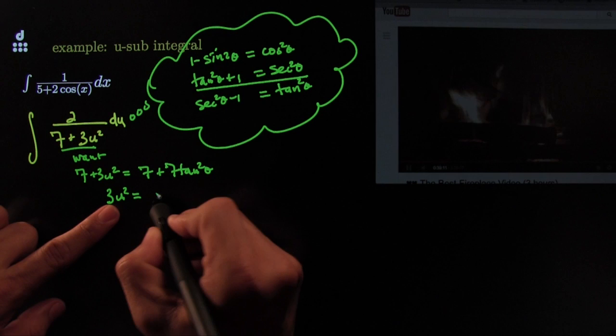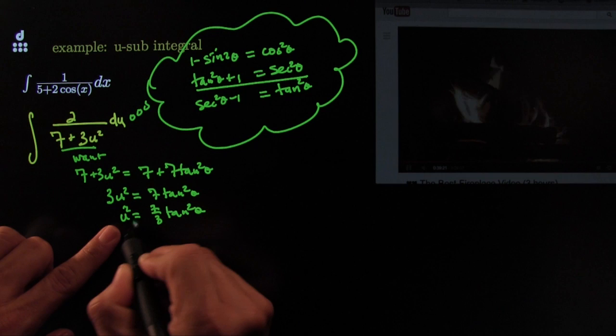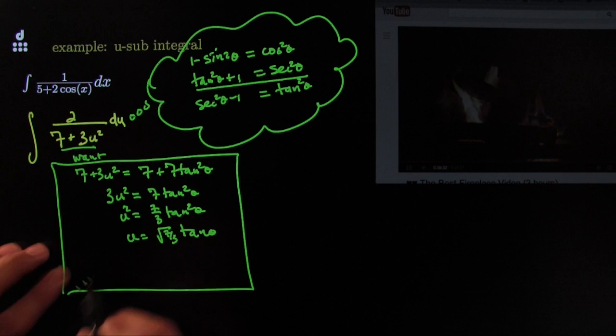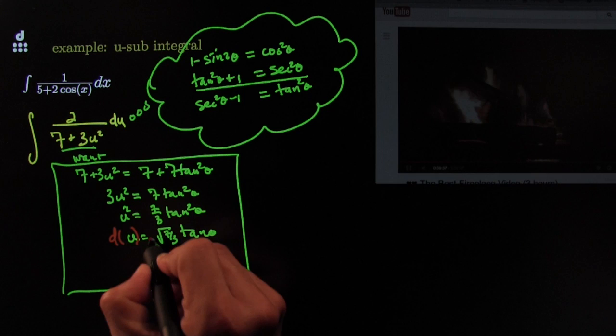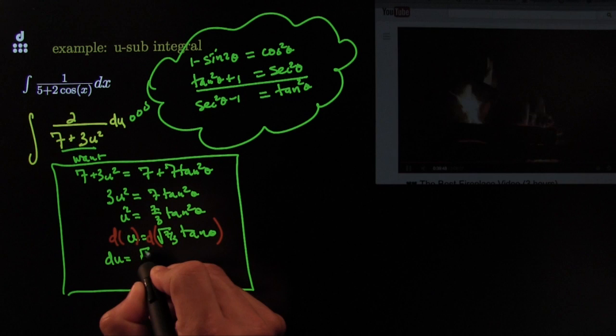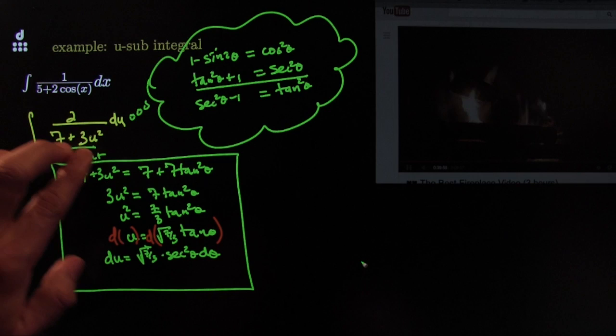So I want u equals the square root of 7 over 3 times tangent θ — that's my dictionary entry. Slapping a d on both sides, du equals square root of 7 over 3 times secant squared θ dθ. Now I can exchange 7 plus 3u squared with 7 plus 7 tangent squared θ using the dictionary. The du gets replaced with square root of 7 over 3 times secant squared θ dθ.